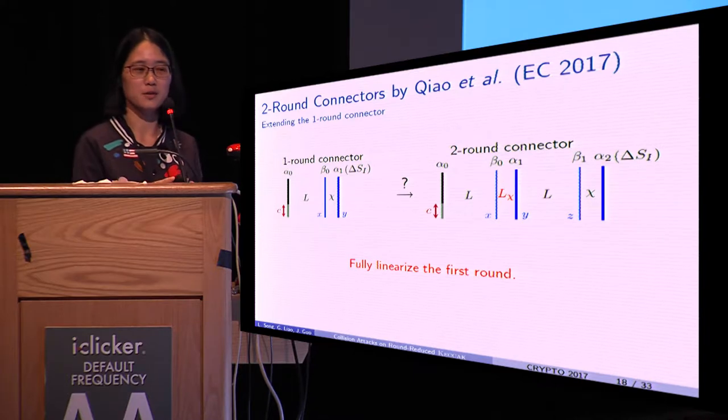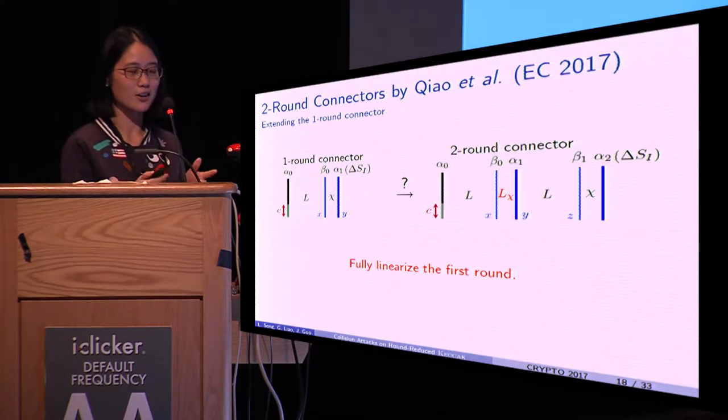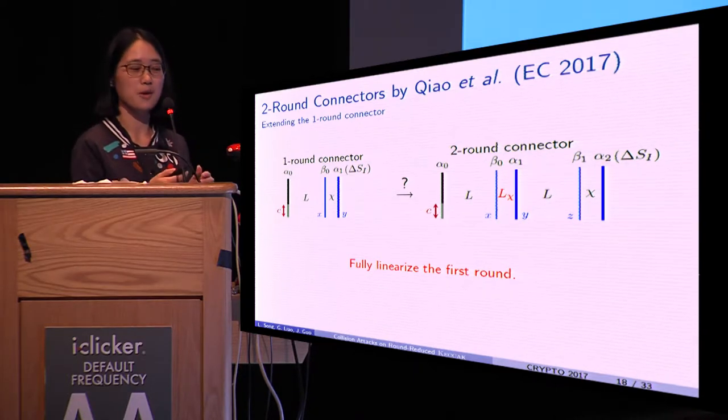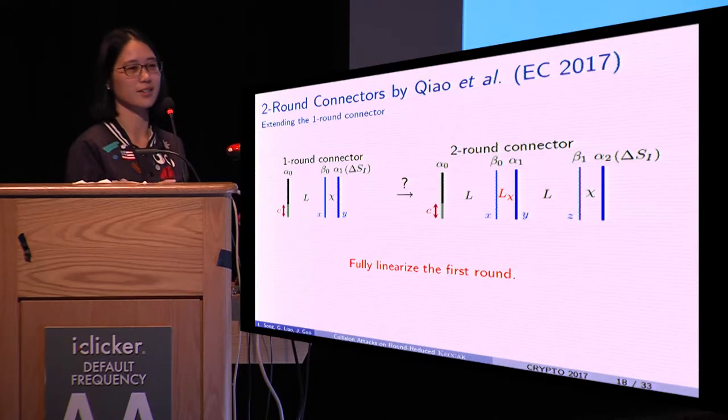At EuroCrypt 2017, Qiao et al. extended the one-round connectors to two-round connectors by fully linearizing the first round.